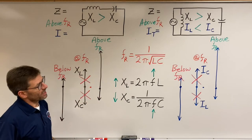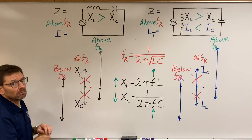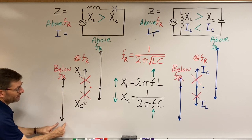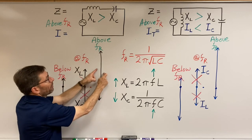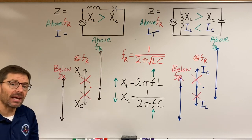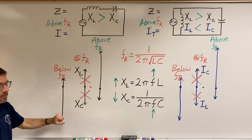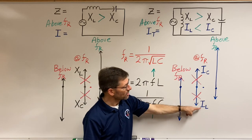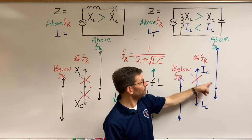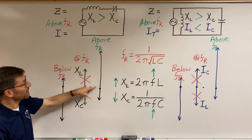Above resonant frequency, this is the effect. At resonant frequency, the series appears like a short circuit and the parallel like an open circuit. Below resonant frequency, the lower vector got longer — the series appears capacitive and the parallel appears inductive. Above resonant frequency, the upper vector got bigger — the series appears inductive and the parallel appears capacitive. As frequency increases, it gets bigger going up, and really it comes down to: biggest vector wins.